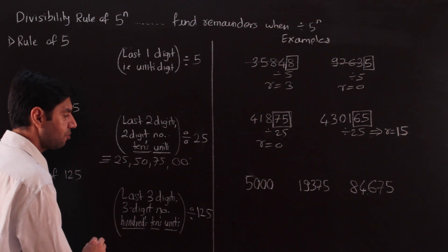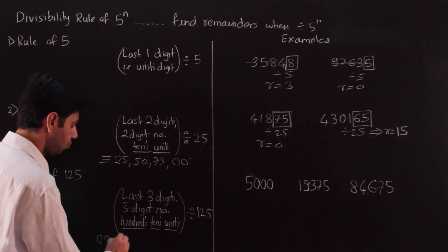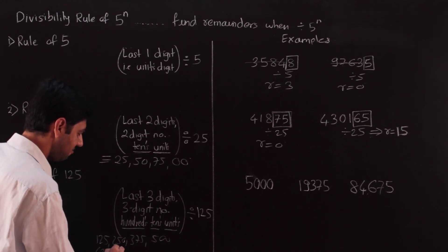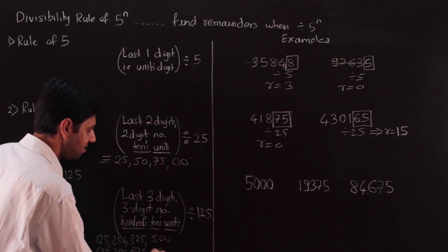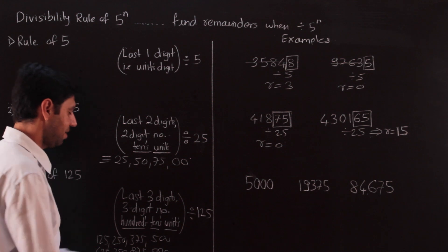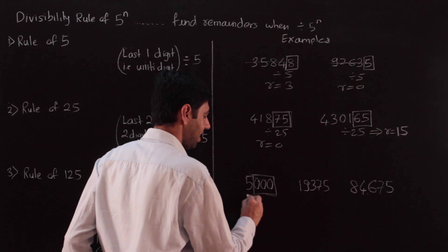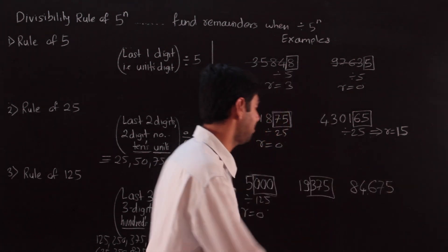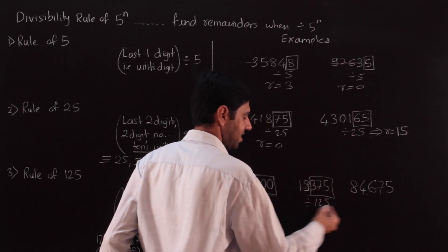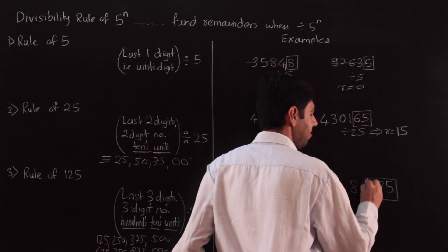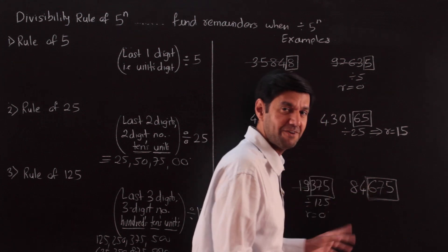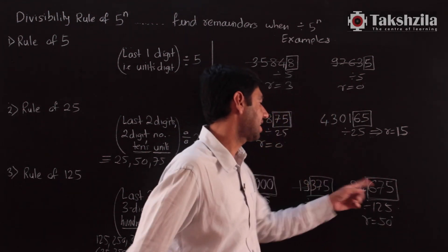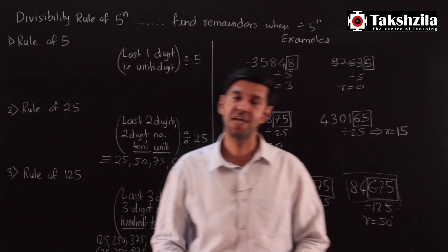For 125, the last three digits must be a multiple of 125. You need to be thorough with these multiples: 125, 250, 375, 500, 625, 750, 875, and 1000 (three zeros). Three zeros means the number is divisible. For 375 — it should immediately strike you that 375 is a multiple of 125, so remainder is 0, the number is divisible. Be careful: 625 is also a multiple (125 × 5 = 625), remainder 0. But if the last three digits are not a multiple — for instance 625 divided by 125 gives remainder 50 — the entire number leaves a remainder of 50.